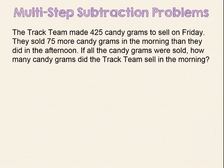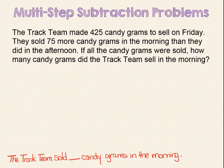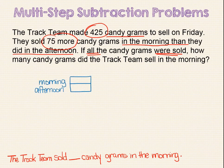Now let's look at some multi-step subtraction problems. The track team made 425 candygrams to sell on Friday. They sold 75 more candygrams in the morning than they did in the afternoon. If all the candygrams were sold, how many candygrams did the track team sell in the morning? Our sentence statement can be: the track team sold blank candygrams in the morning. I am going to start the model drawing with two equal sized unit bars — one to represent candygrams sold in the morning and one for the afternoon. Since they sold 75 more in the morning, we can add 75 onto the morning unit bar. We are also told that all 425 candygrams were sold, so we can bracket the two bars and show that they total 425. We can put our question mark on the morning bar.